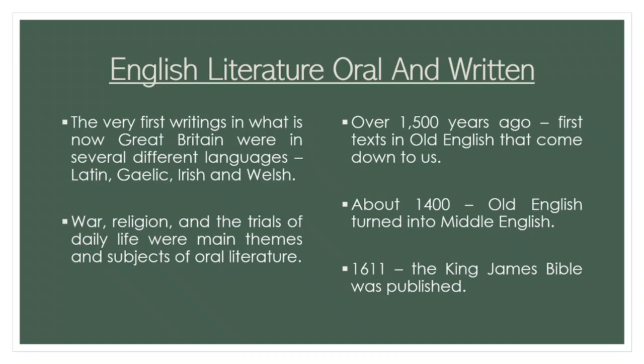English literature — oral and written. The very first writings from what is now Great Britain were in several different languages: Latin, of course, since the Romans had occupied these islands for some four centuries; also Gaelic, Irish, and Welsh. Most literature was part of an oral tradition and was rarely written down until much later. Literature is as old as human language, and it is everywhere — not only in books but in videos, television, radio, CDs, computers, newspapers, and all media of communication.